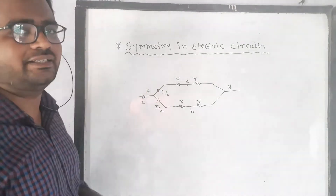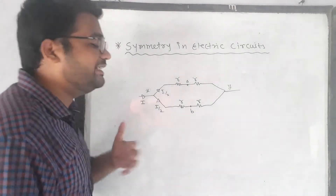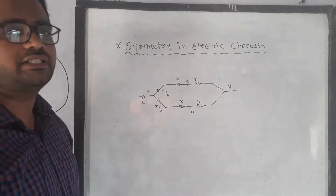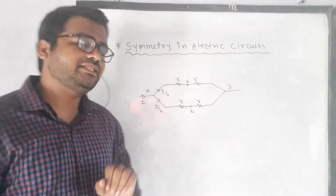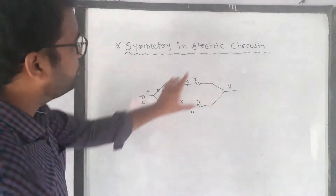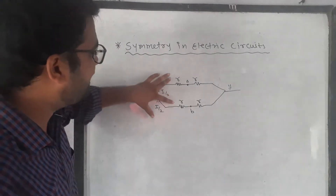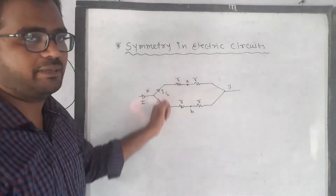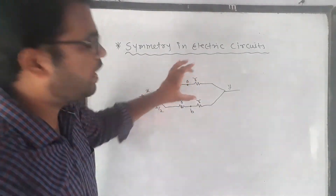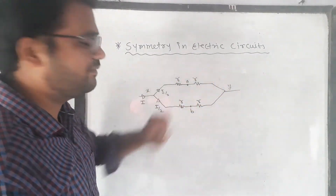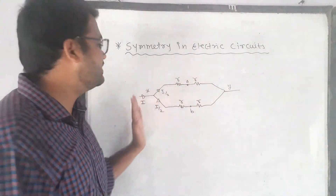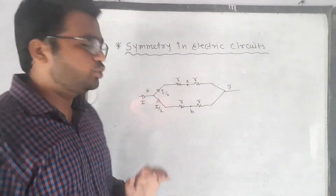The whole concept of symmetry in electric circuits lies in identifying equipotential points. Here A and B are equipotential, so we can connect or attach them. That makes this R and this R in parallel, giving R/2 as the equivalent resistance. With R/2 in series on each side, the equivalent resistance between X and Y is R.